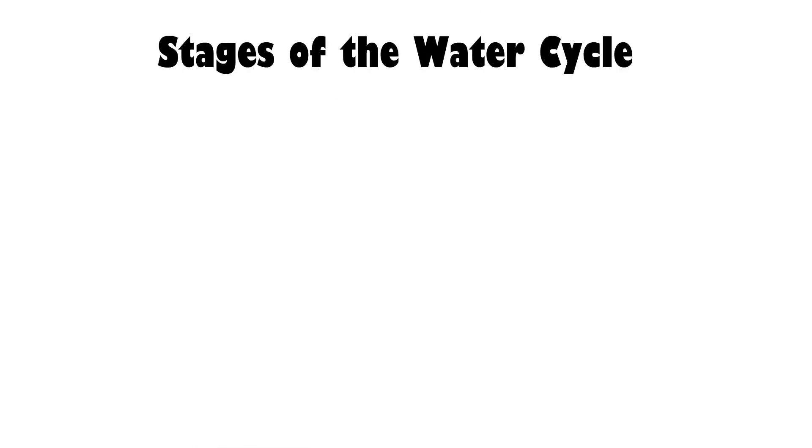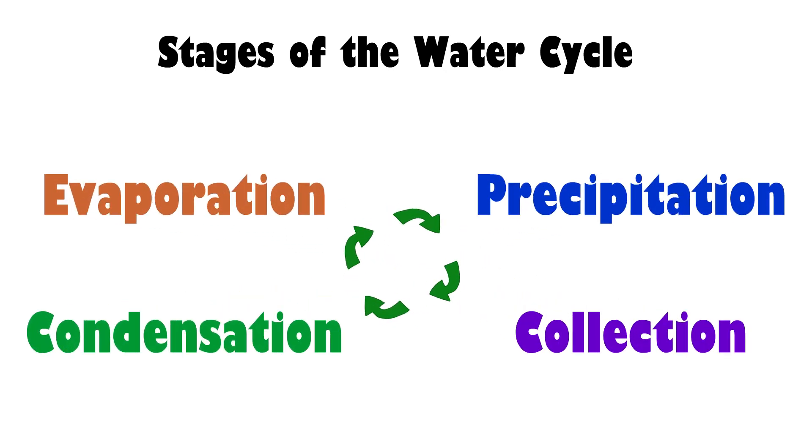There are four major stages of the water cycle and we are going to talk about all of them. These stages are evaporation, condensation, precipitation, and collection. Wow, what a tongue twister!